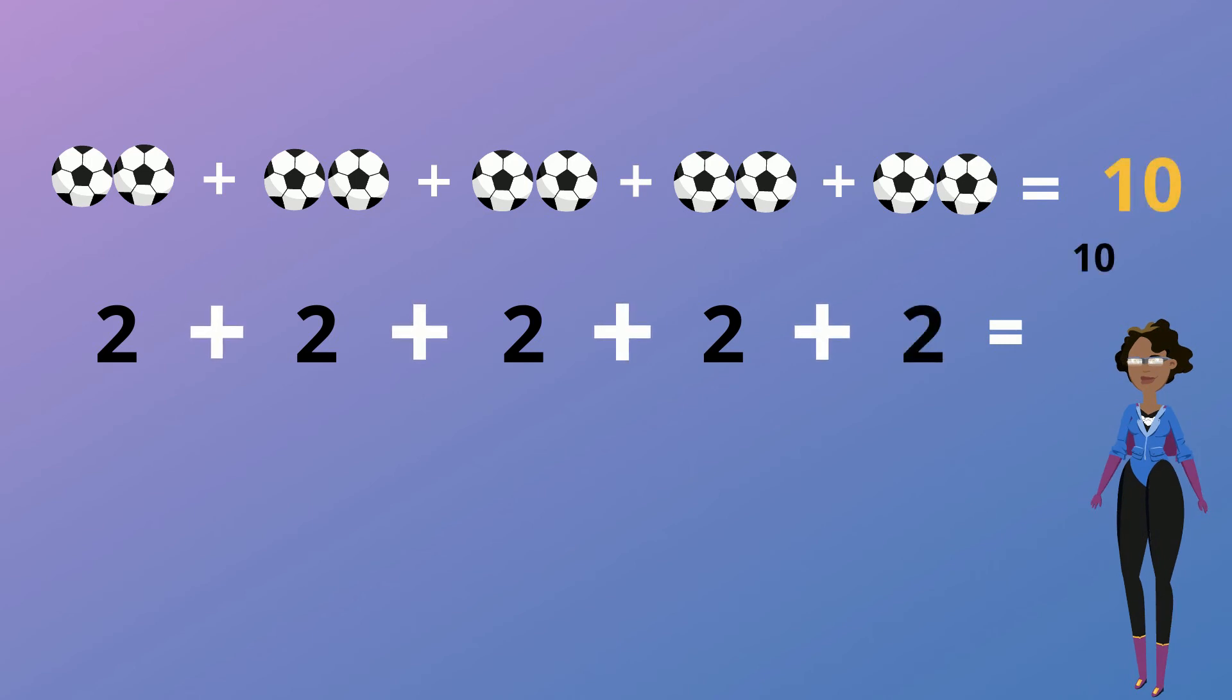Now let's do our multiplication sentence for this. How many sets of 2 did we add? That's right, 5. And what number did we add? That's right, we added 2. So our multiplication sentence would then be 5 for 5 sets multiplied by 2 which is equal to 10.